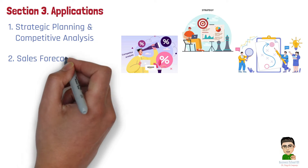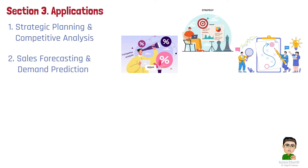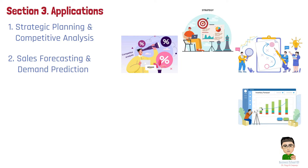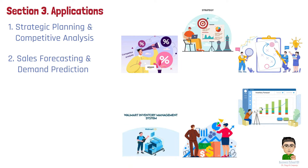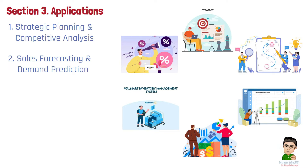Number 2: Sales forecasting and demand prediction. By analyzing historical sales data and market conditions, managers can accurately forecast demand, optimizing inventory and resource allocation. This reduces risks like overproduction or stockouts, leading to cost savings and better customer satisfaction. For example, Walmart leverages data analytics to predict customer demand, optimizing inventory levels and ensuring products are available when needed, reducing stockouts and excess inventory.